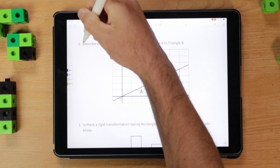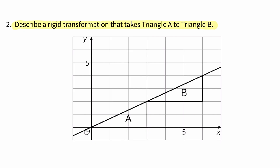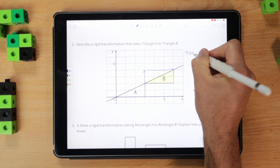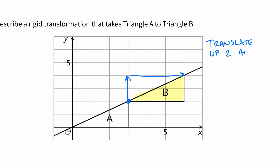Number two: describe a rigid transformation that takes triangle A to triangle B. Here we have triangle A and we want to get it over to triangle B. We're going to take a point on that and translate it up two and to the right three units.